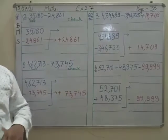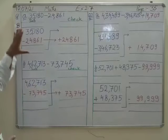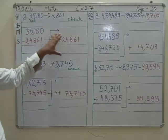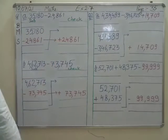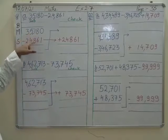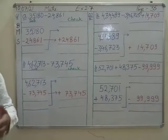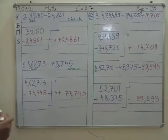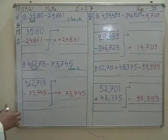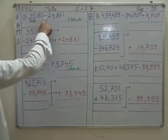I have told you that you can write question number 1 in your copy. You can draw lines and write it quickly. Now let's subtract — the question is 35,180 minus 24,000. We have a minus sign here, which means we have to subtract.